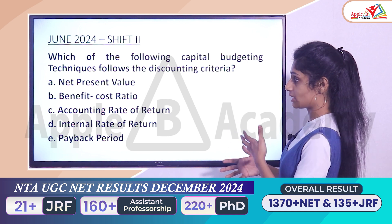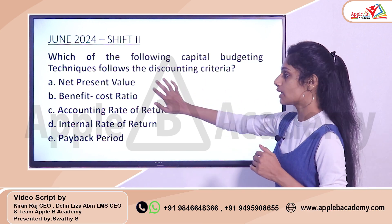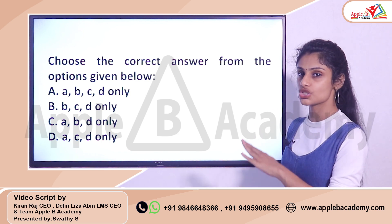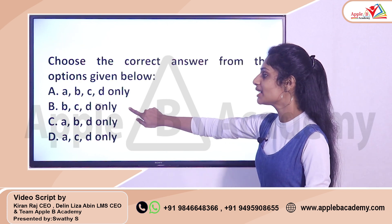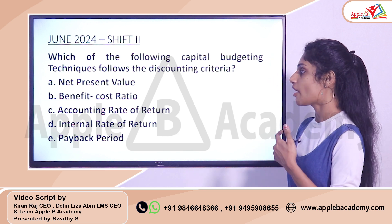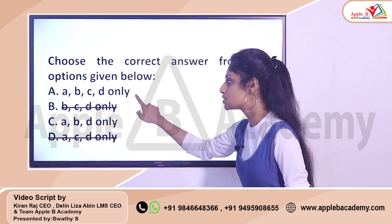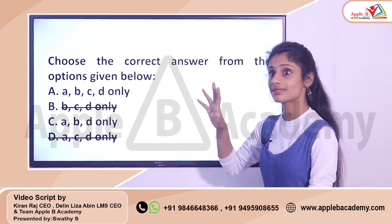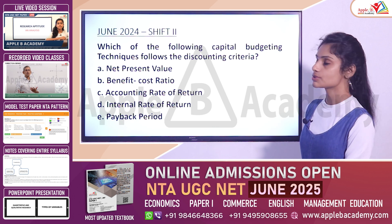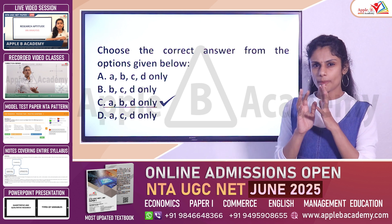If you cannot identify everything in a combination-type question, you can use an elimination strategy. You know NPV (A) will be there, so eliminate options that exclude A — like option B, which does not include A. Then, since B (benefit-cost ratio) is also included, eliminate options that exclude B, like option D. You are left with options A-B-C-D and A-B-D. Since accounting rate of return (C) is not a discounting technique, you eliminate it and choose option C — which contains only A, B, and D. The correct answer is option C.